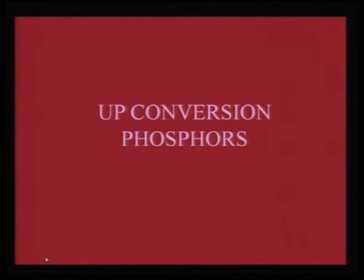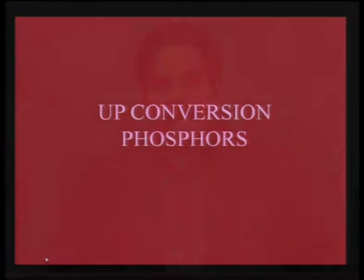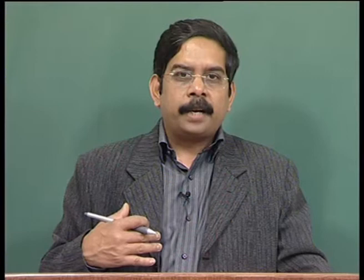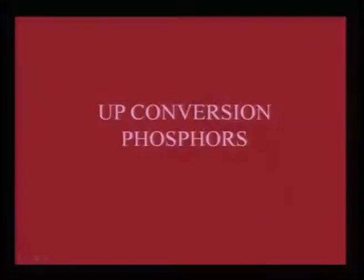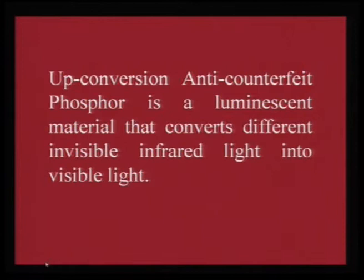Another category is up-conversion phosphors. We know that UV excitation normally gives emission at a higher wavelength — lower energy — which is the Stokes rule. Up-conversion phosphors are actually anti-Stokes phosphors because they take in energy at a lower wavelength range but emit at a higher energy, and are therefore also called anti-Stokes phosphors.